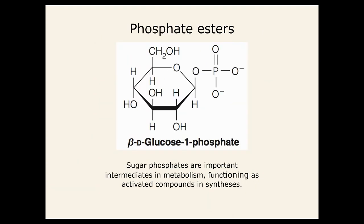Sugars can form phosphate esters. We discussed this with glucosphingolipids, where glucose can attach to phosphates — and in our previous discussion it was attached to a lipid. Beta-D-glucose-1-phosphate is beta because the OH on carbon 1 is above the ring.